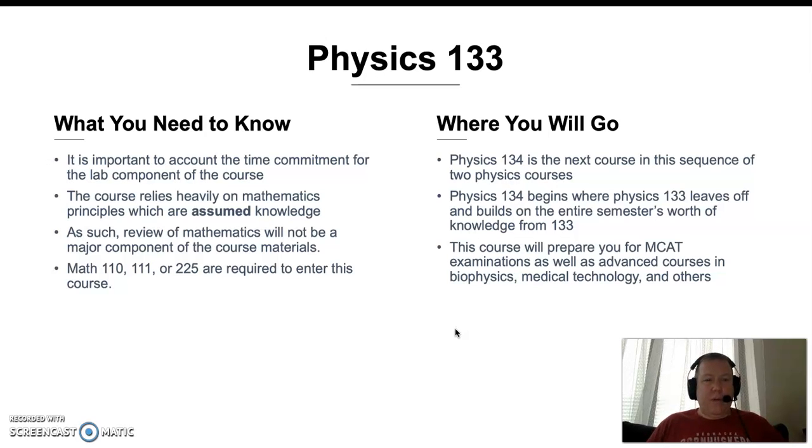So again the mathematical requirements are 110, 111, or 225. Where will you go from here? Some students will finish at 133, but many of you will move on to Physics 134. That is the next course in the sequence and it begins exactly where 133 leaves off. Most students find it useful to take 134 right after 133 because the material is still fresh in their memory.